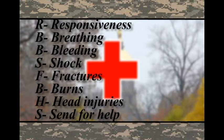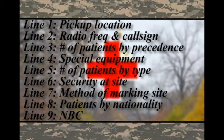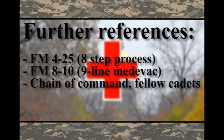Once the casualty has been assessed and all information gathered, it should be put into a nine-line report consisting of: Line 1 — Pickup site location. Line 2 — Radio frequency and call sign. Line 3 — Number of patients by precedence. Line 4 — Special equipment required. Line 5 — Number of patients by type. Line 6 — Security of the pickup site. Line 7 — Method of marking pickup site. Line 8 — Patient nationality and status. Line 9 — Nuclear, biological, or chemical conditions. For further information, refer to FM 4-25 for the 8-step evaluation process and FM 8-10 for the nine-line medevac process.